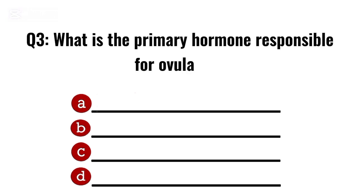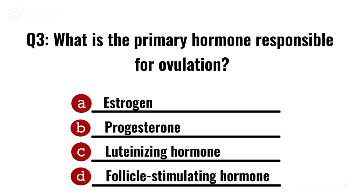Question 3. What is the primary hormone responsible for ovulation? Correct option C: Luteinising hormone.